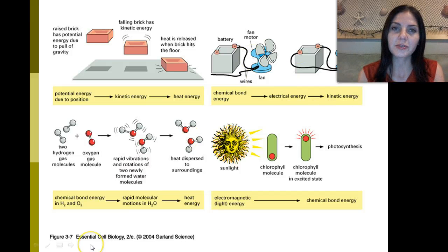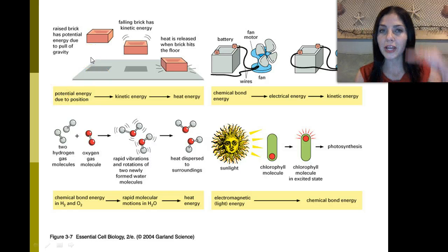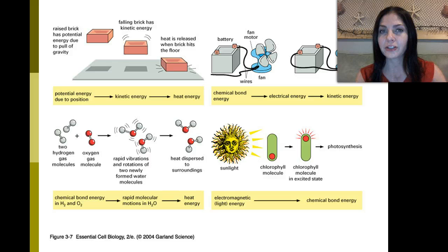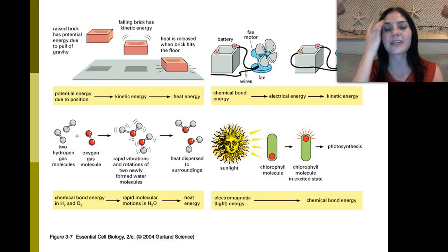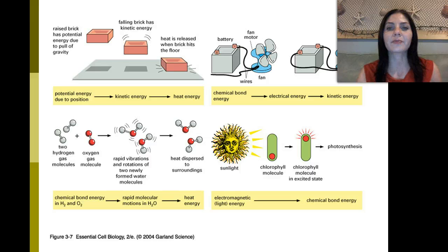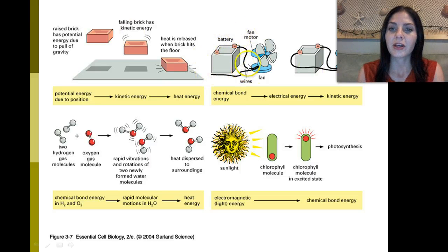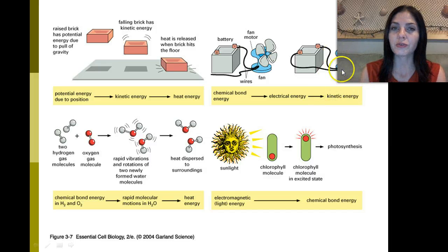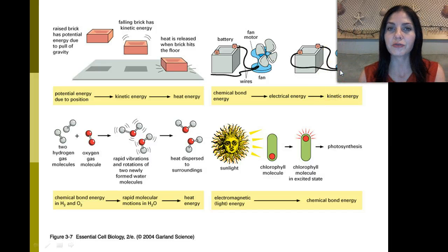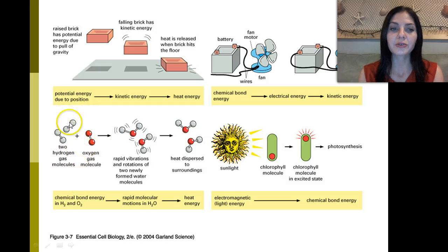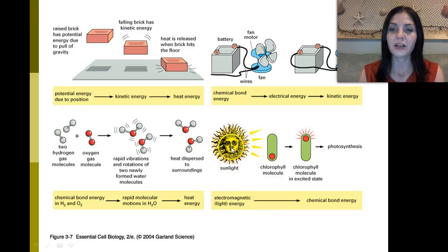Here are some examples of different types of energy forms. A raised brick falling to the ground is kinetic energy as it falls, and when it smacks the ground it releases a little bit of heat. Chemical energy stored in a battery powers a fan and is converted into electrical energy; the fan then moves, which is kinetic energy. Chemical energy can also be stored in the bonds of molecules and released as heat energy. Energy from the sun excites chlorophyll molecules and gets released in the chemical bond.